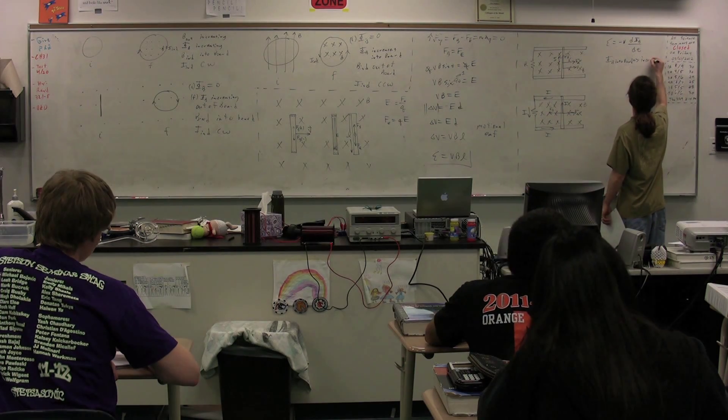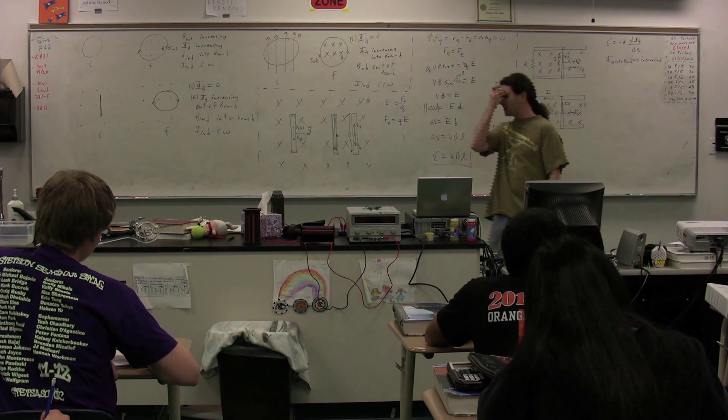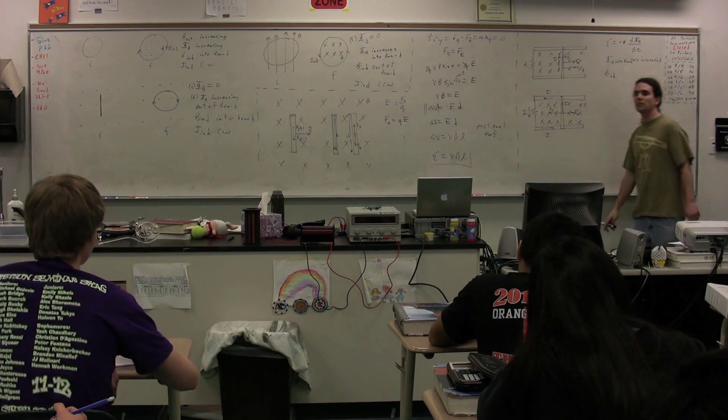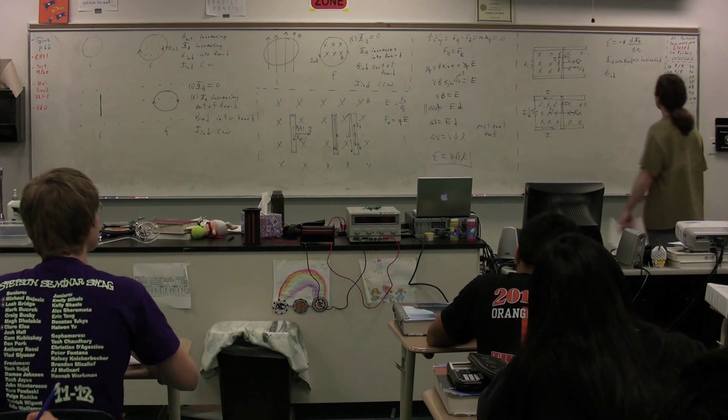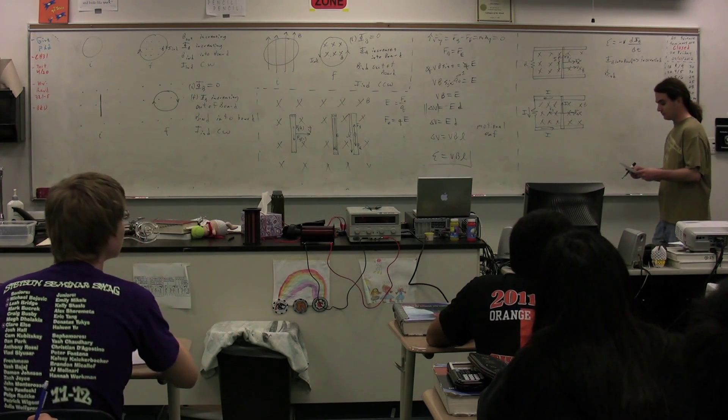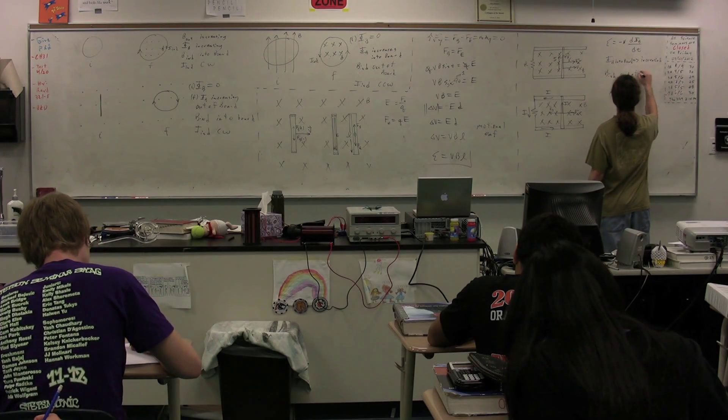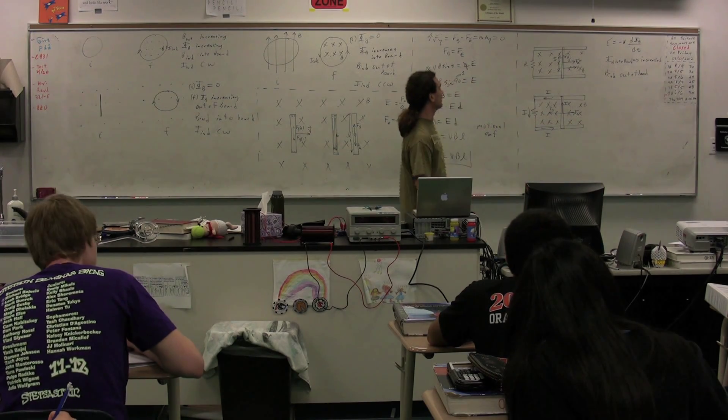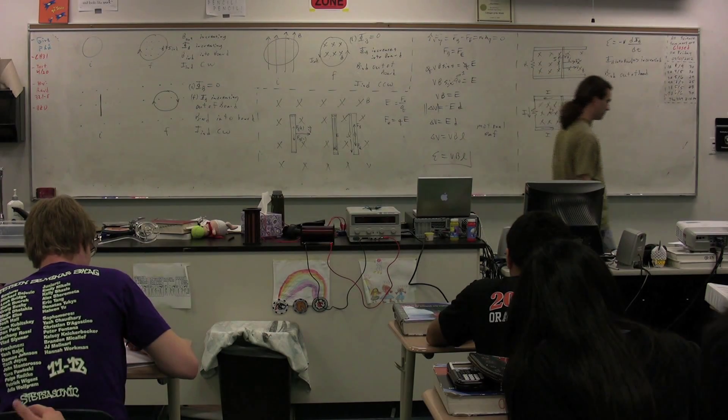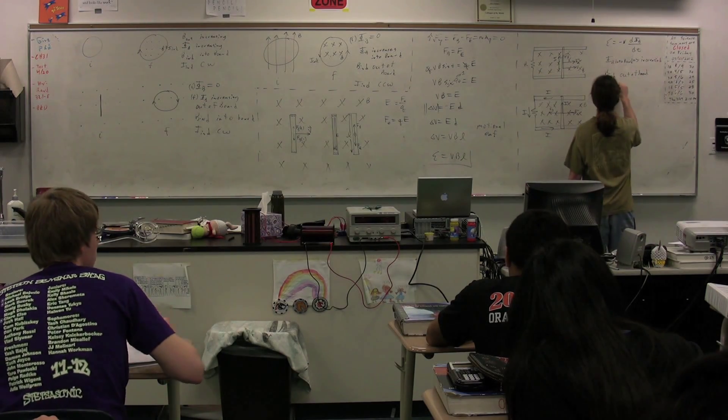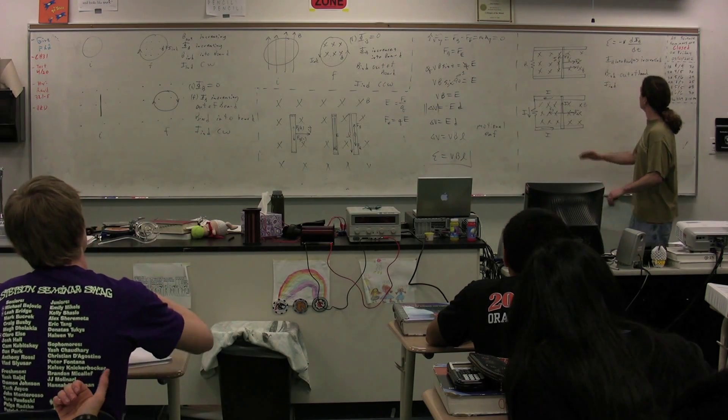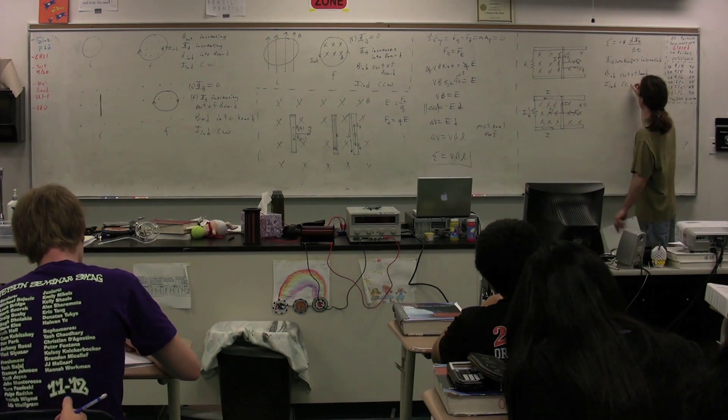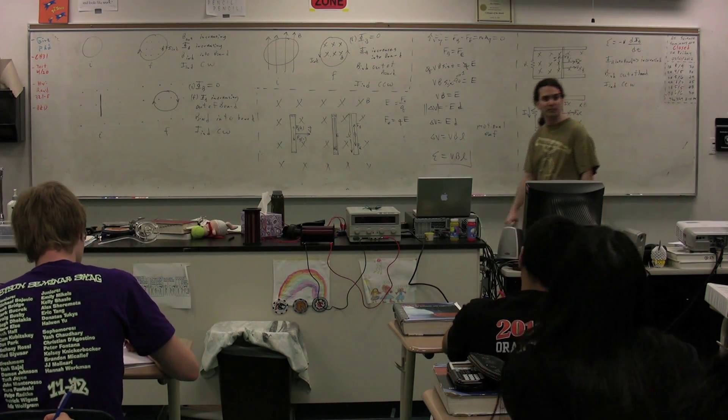If the magnetic flux is increasing into the board, we have an induced magnetic field, which is going to be in what direction? If the induced magnetic field is out of the board, what is the direction of the current in this loop? Counterclockwise. Notice, that's exactly what we got before, just looking at it from two different perspectives.